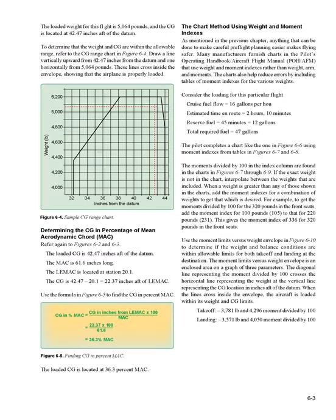The loaded weight for this flight is 5,064 pounds, and the CG is located at 42.47 inches aft of the datum. To determine that the weight and CG are within the allowable range, refer to the CG range chart in Figure 6-4. Draw a line vertically upward from 42.47 inches from the datum and one horizontally from 5,064 pounds. These lines cross inside the envelope, showing that the airplane is properly loaded.